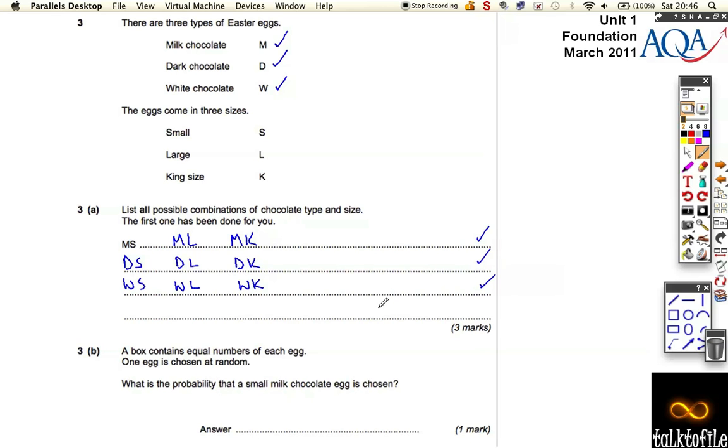A box contains equal numbers of each egg. One egg is chosen at random. So there's all nine in a box.